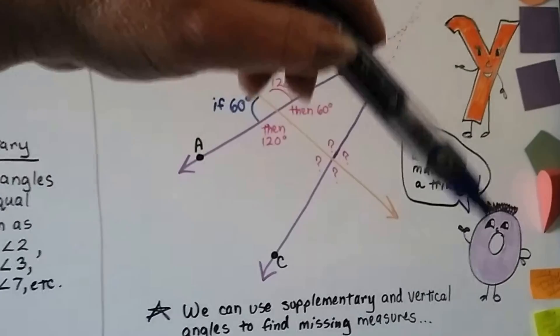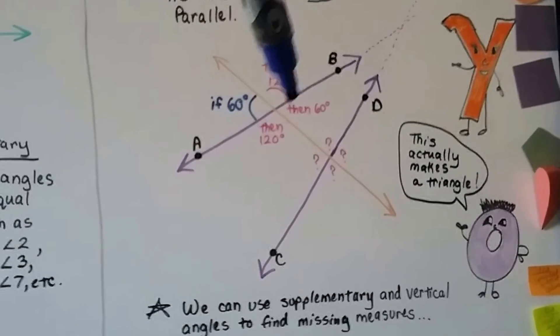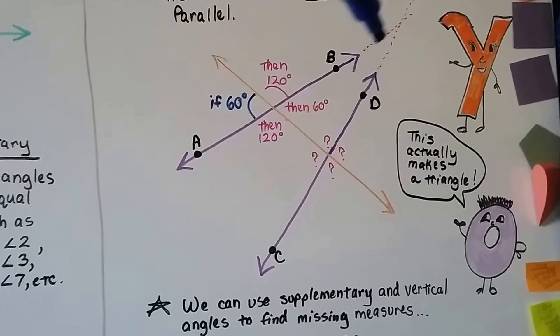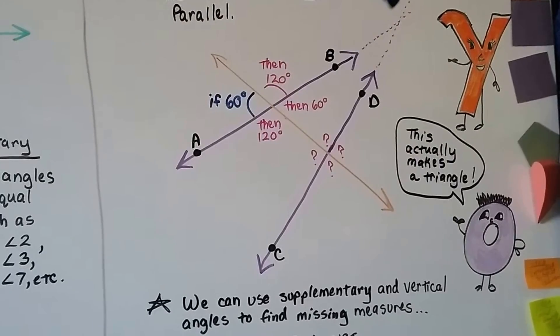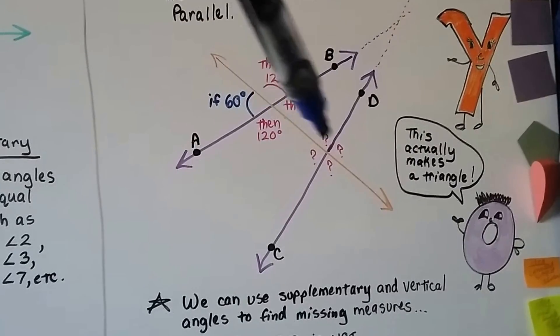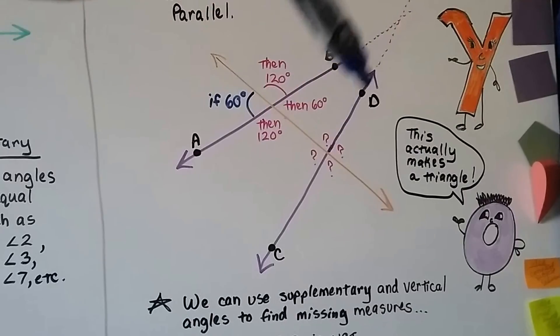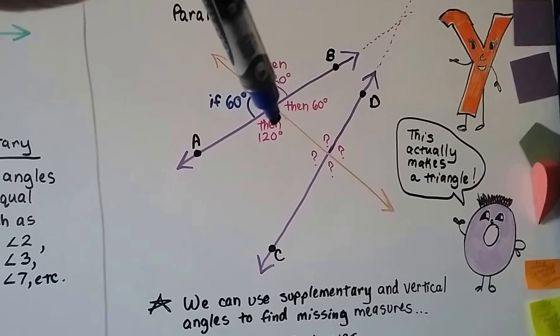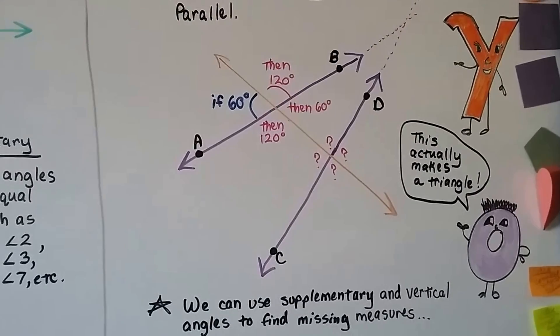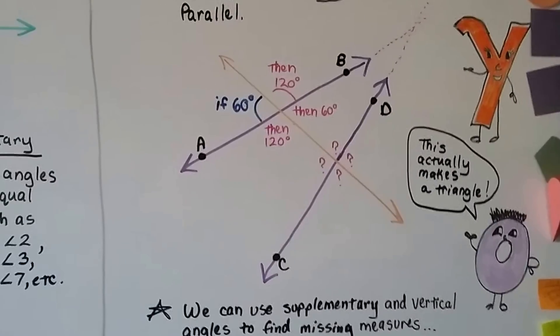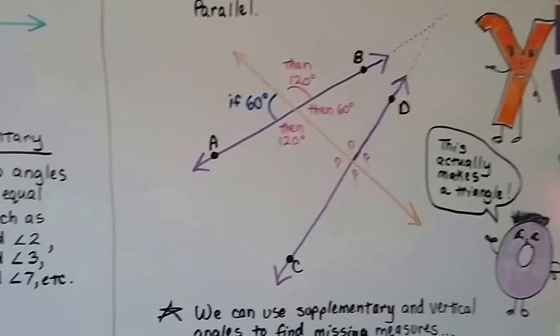Actually, like the little zero is saying, if we did extend these lines, we'd have a nice triangle here.